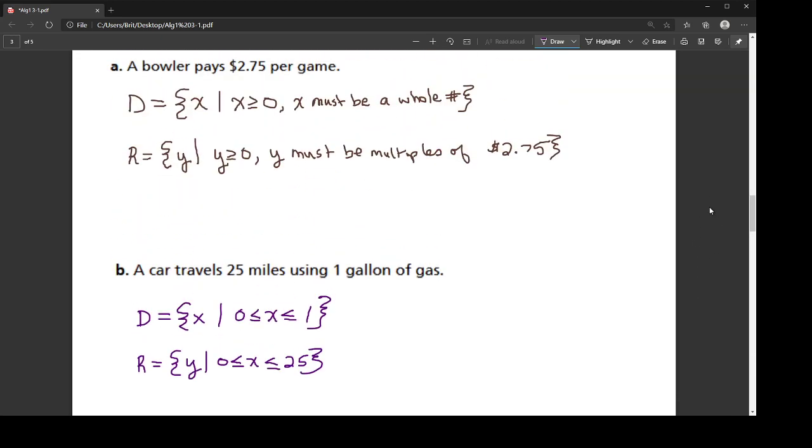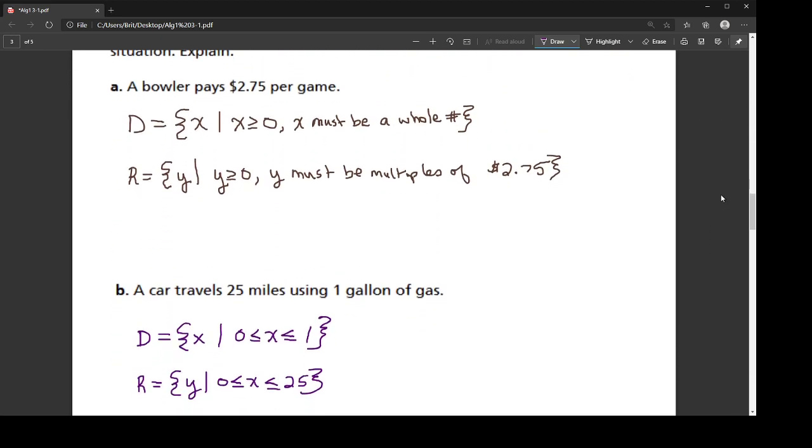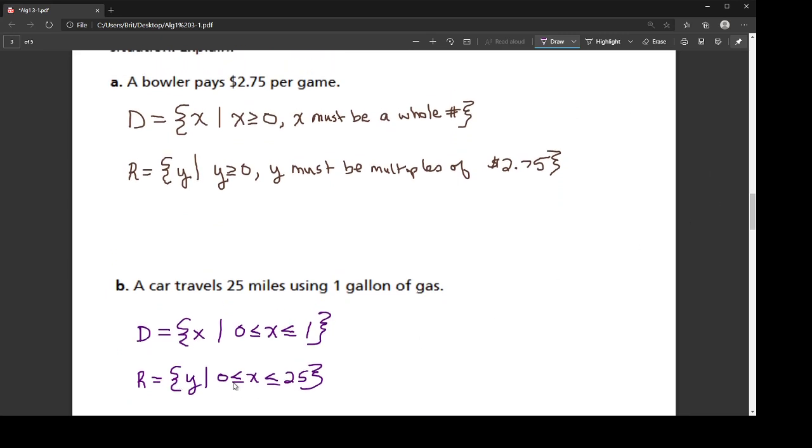So if we take the discussion back to our continuous versus discrete, you see, I can go any percentage of this gallon of gas. There's no specific thing cutting off how I use that gas, other than that it's between zero and one. So this is a continuous function. Now, in this case, in part A, see how we had to restrict it further than just being greater than zero? It had to be a whole number or a multiple of something. This is going to produce the discrete graph that we saw, those dotted lines.